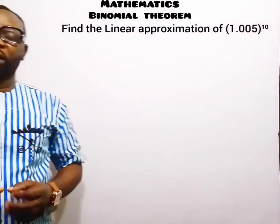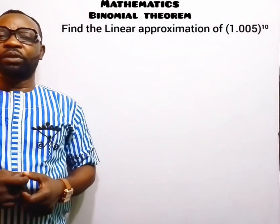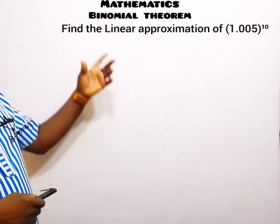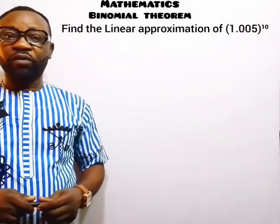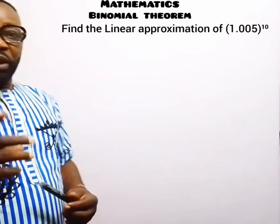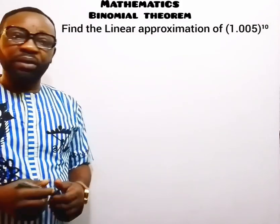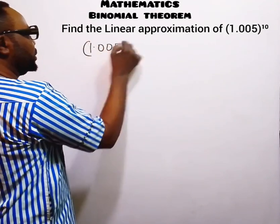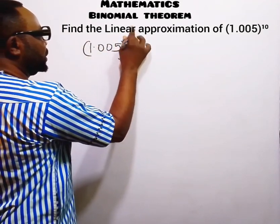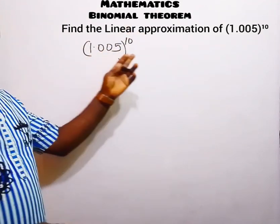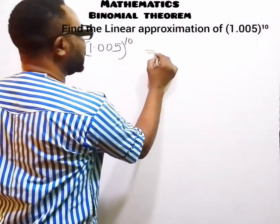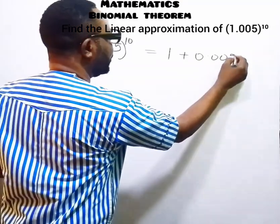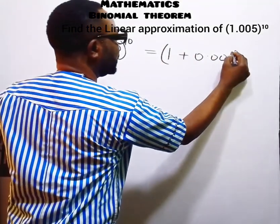The first question under linear approximation asks us to find the linear approximation of 1.005 raised to the power of 10. This can be converted into the form 1 plus 0.005, raised to the power of 10.